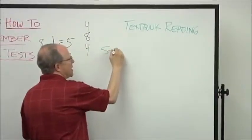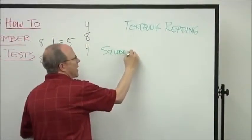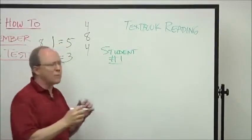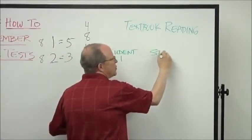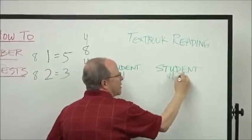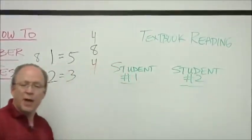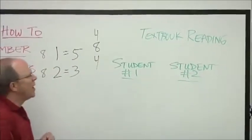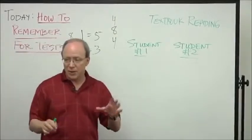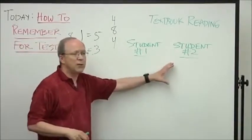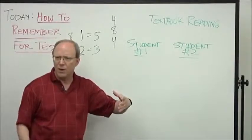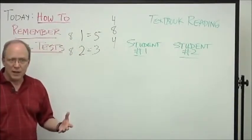We're going to look at two students who are both good students who try hard and want to do well. They're like clones of each other, but student number one does some things when they read that make them forget almost everything. Student number two does some things that help them remember almost everything. So we want to figure out what's the secret.